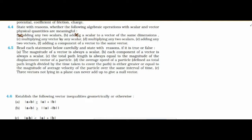Multiplying any vector by any scalar is possible — we have already discussed this in the chapter. For example, you can multiply a vector by a scalar quantity. Multiplying any two scalars is also possible; for example, multiplying speed and time gives distance.